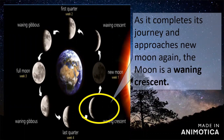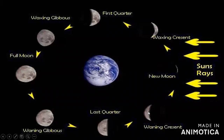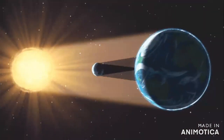As the moon completes its journey and approaches new moon again, it is in the waning crescent phase. In review: the phases visible from earth in order are new moon, waxing crescent, first quarter, waxing gibbous, full moon, waning gibbous, last quarter, and waning crescent, before returning to the new moon.